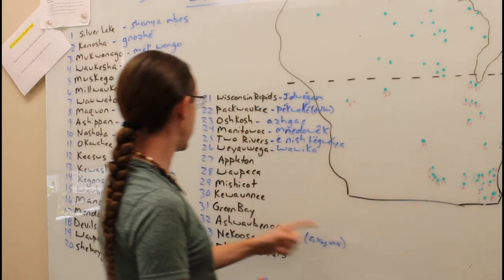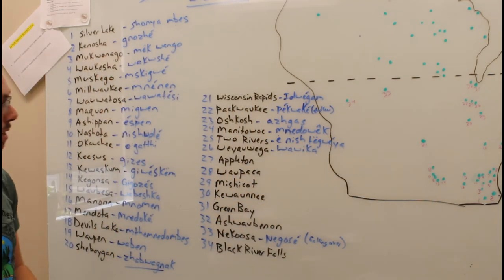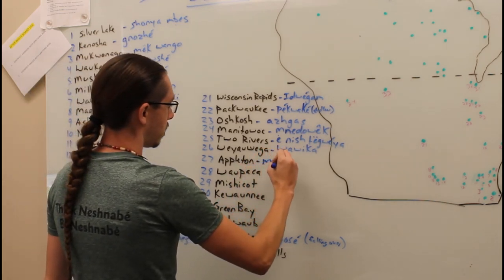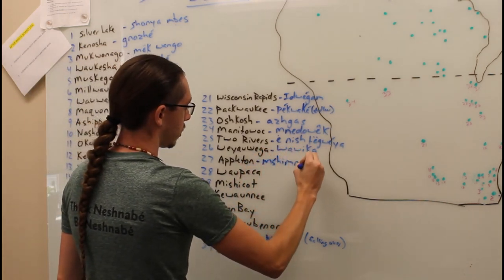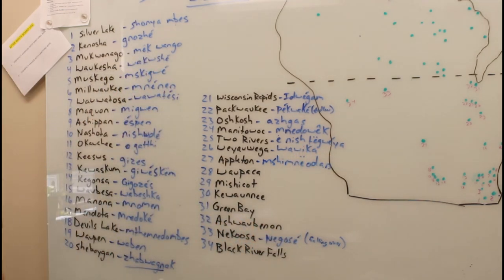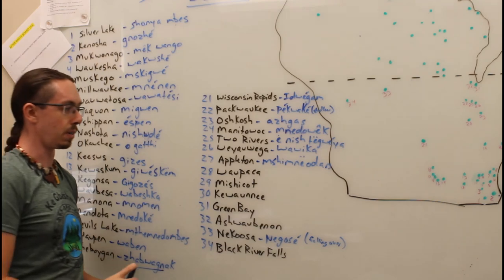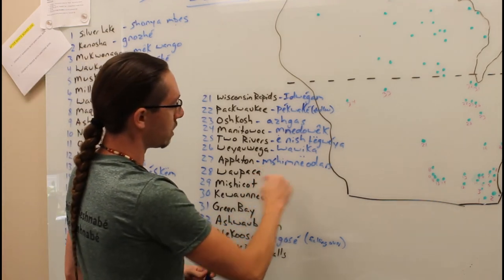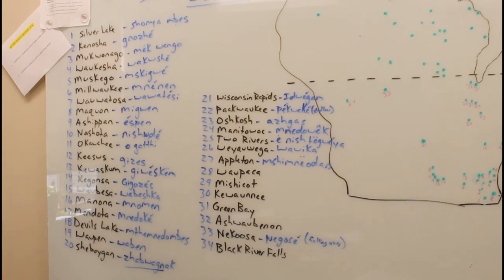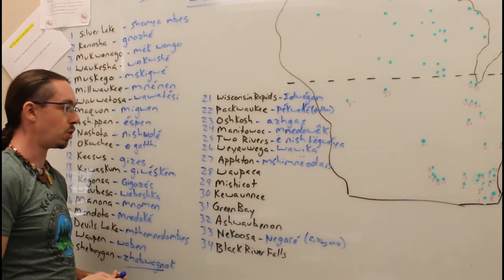Right next there, we have Appleton, Wisconsin. Appleton, we call that Mishimna Odon. Mishimna is an apple, Odon is town. So the apple town is what we call that.